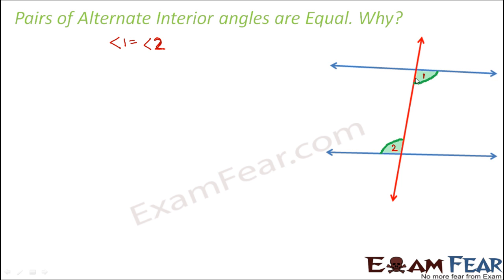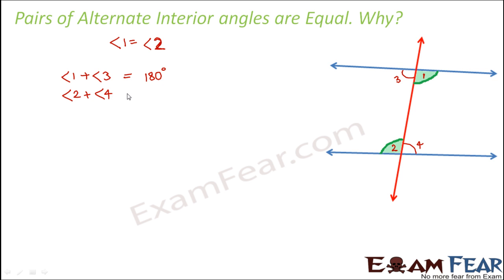Looking at this diagram, let us also mark angle 3 and angle 4. Angle 1 and angle 3 together form a linear pair, so angle 1 plus angle 3 equals 180 degrees. Similarly, angle 2 plus angle 4 equals 180 degrees. From these two, we can say that angle 1 plus angle 3 equals angle 2 plus angle 4.